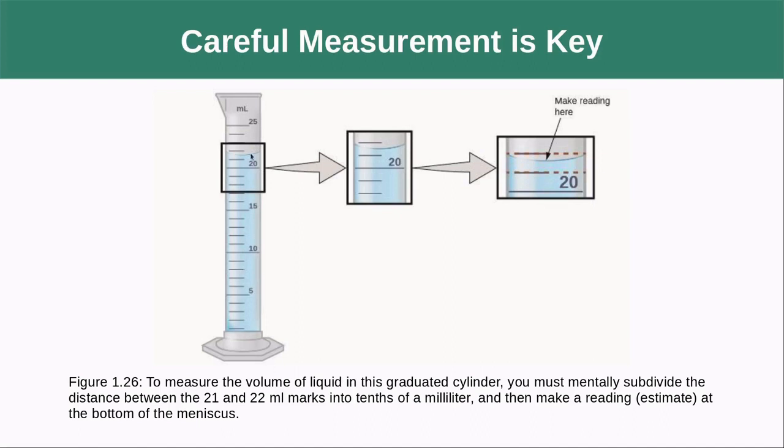Here for instance, we have a graduated cylinder. It has 20 here, has 25 here, has five markings in between. So each one of these is one milliliter. So here we're going to have 20, this is 21, this top line here would be 22.